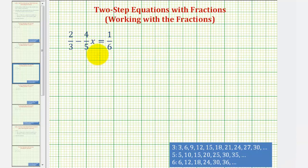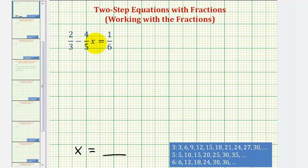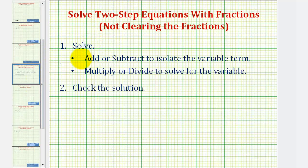Looking at the given equation, notice that x is on the left side of the equation, which means in order to solve this equation for x, we want the equation to be in the form of x equals some number or some fraction. So remember, to solve a two-step equation, the first step will be to add or subtract to isolate the variable term and then multiply or divide to solve for the variable. And then we'll also check our solution.